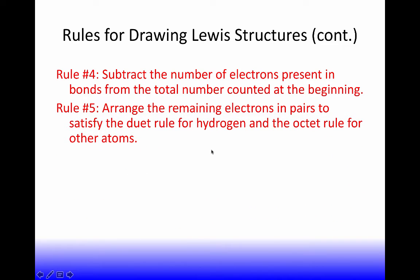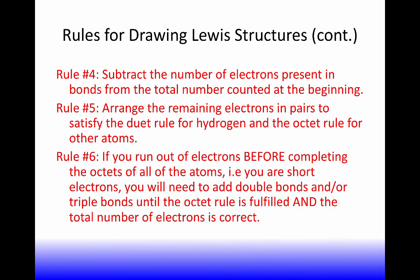The fifth rule is you arrange any remaining electrons, again, everything is going to be in pairs, to satisfy the duet rule for hydrogen and the octet rule for other atoms. Honestly, as soon as hydrogen forms a bond, you're done. But many of the other atoms you'll see don't necessarily get a full octet when we do this step. The reason why is because sometimes they have double bonds. As you will find out when you look at the example, sometimes you will run out of electrons before completing all the octets. So if you're short electrons, you will need to add double bonds and or triple bonds until the octet rule is fulfilled and the total number of electrons is correct. Again, I'm going to go through this very quickly. Watch the video. The video takes you through four examples on how to apply these rules.